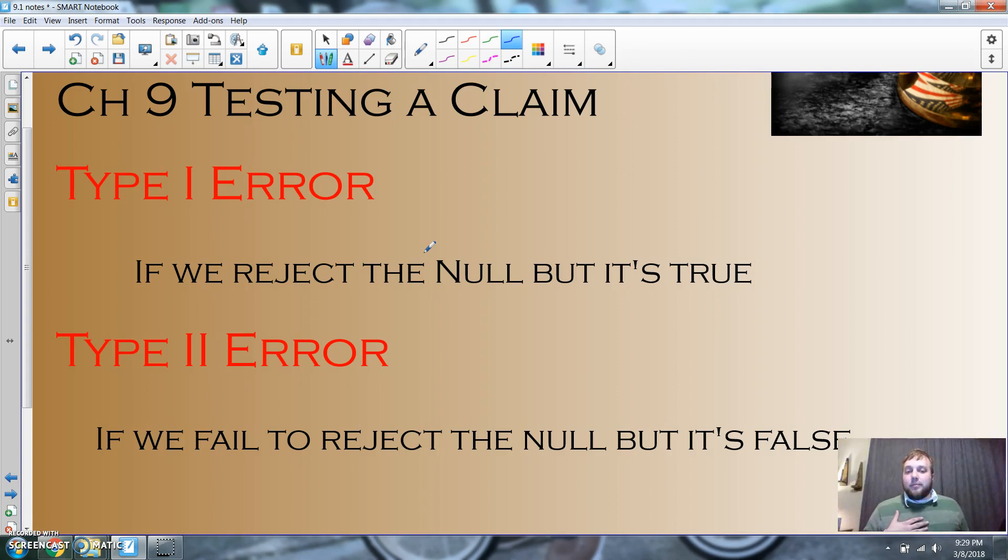Type II error is when we fail to reject or accept the null, but it's actually false. So I say I believe you, but actually you are a liar. These are the two types people always get confused.